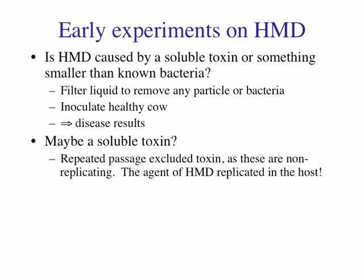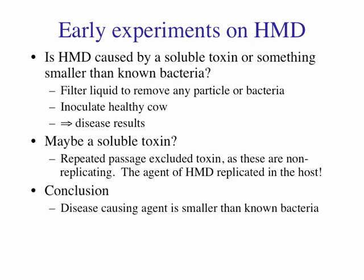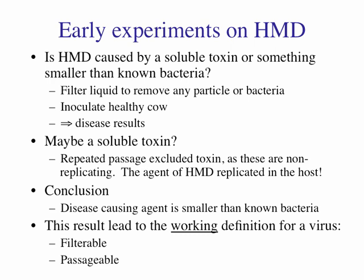They filtered the bacteria out and inoculated cows with the liquid from those blisters — and again, they got disease. So it didn't seem to be a soluble toxin. They decided that if they passaged the material, any toxin would be diluted away, so they should get no problems. But when they added the liquid back to the cows, they got disease one more time. Something is replicating in the host. Because they could filter it and still cause disease, the agent must be very tiny and smaller than any bacteria. This gave us the working definition of a virus: it is a filterable agent that can be passaged from culture to culture.